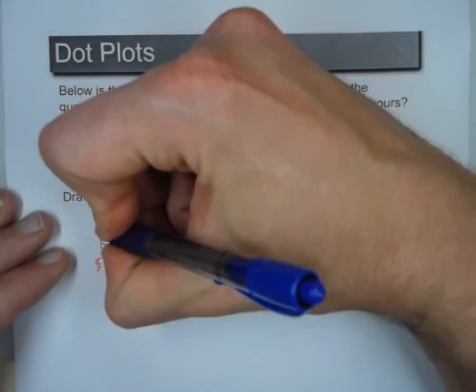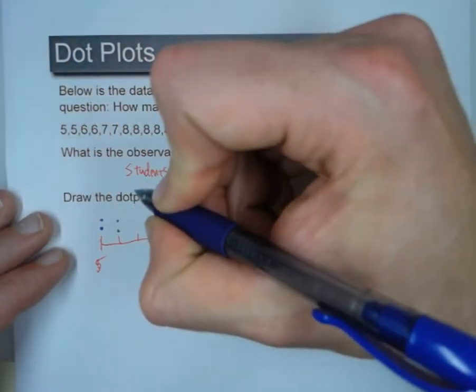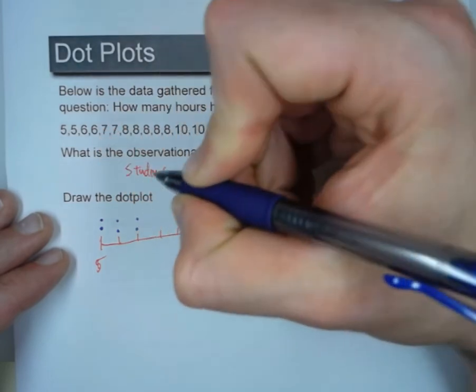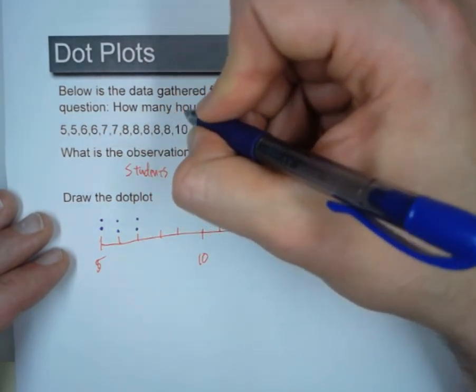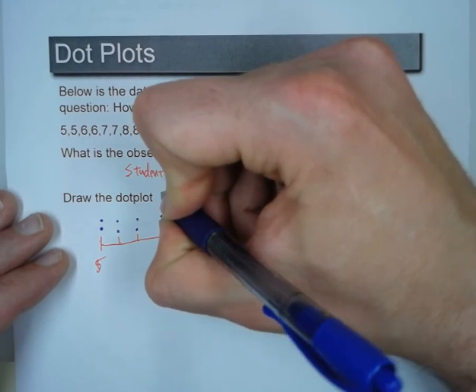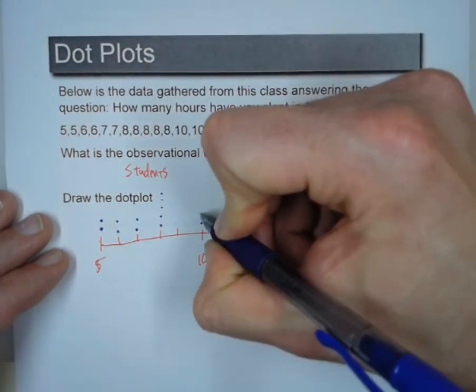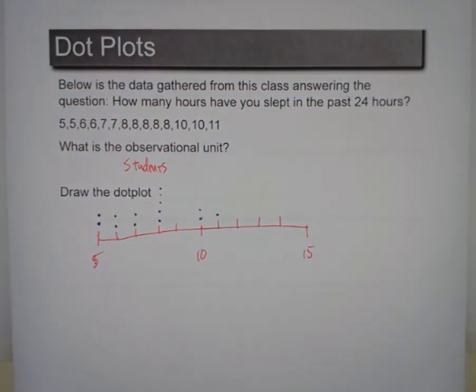So two people got five hours in the last twenty-four hours. Two people got six. Two people got seven. One, two, three, four, five people got eight. Two people got ten. And one person got eleven. So that is what our dot plot will look like.